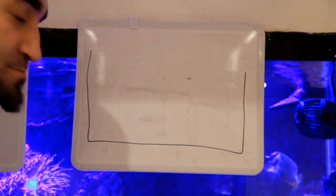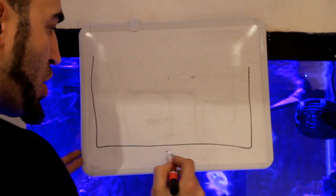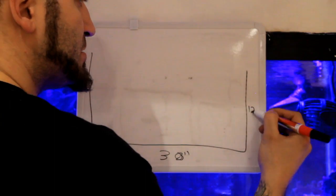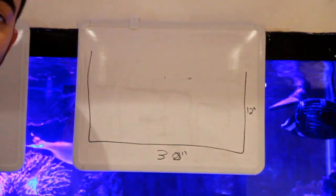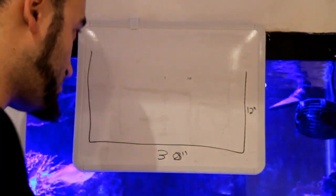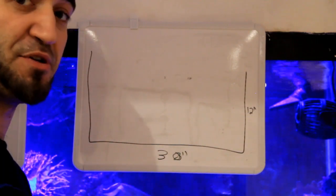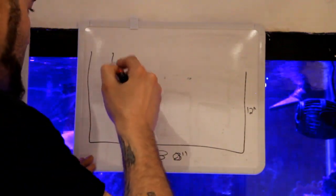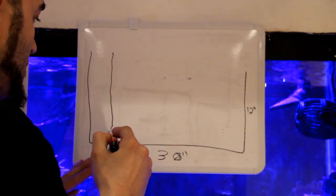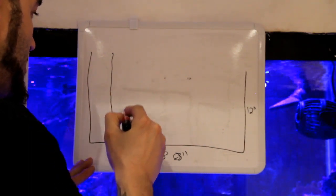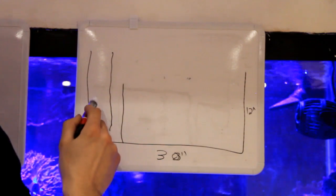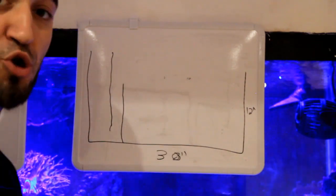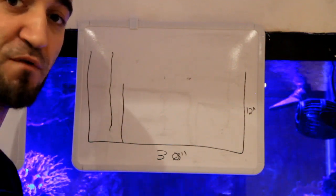So here's my sump tank, measures 30 inches long, 12 inches tall, and also 12 inches front to back. We're gonna divide this up into three chambers, first chamber starting on the left. This chamber right here is gonna be for my live rock. Let's continue drawing the sump filtration and you'll get the overall picture.